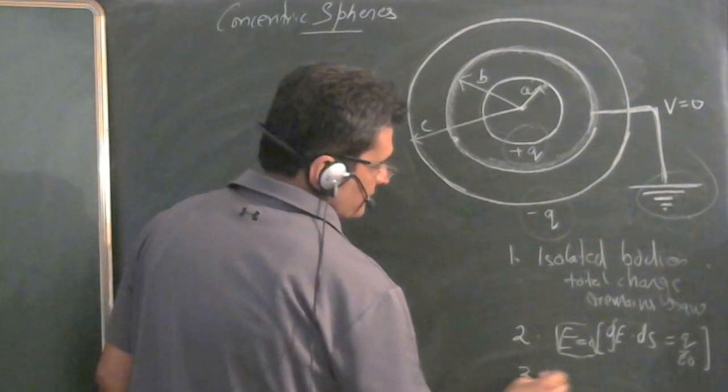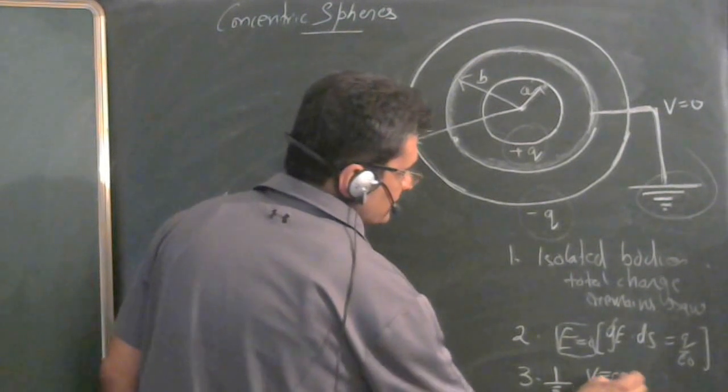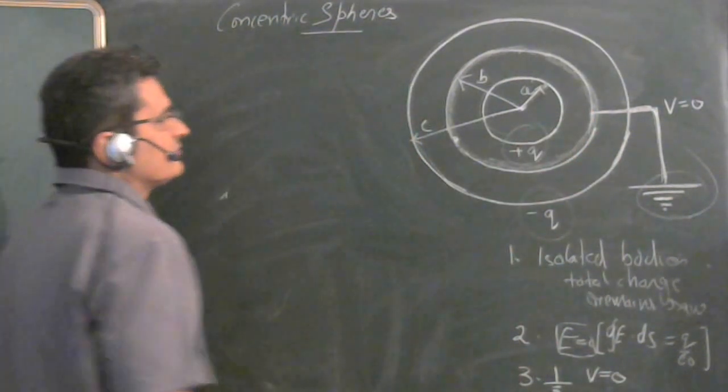And third point is, when earthing is done, the potential of that sphere will be zero. So with these three points, we can solve this problem.